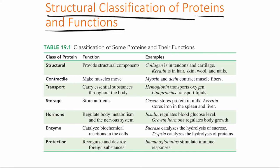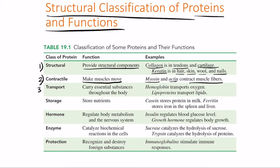We classify proteins based on their functional properties. First are structural proteins, such as collagen — present in tendons and cartilage — and keratin, found in hair, skin, wool, and nails. Second are contractile proteins, such as myosin and actin, which make muscles move. Third are transport proteins, such as hemoglobin, which transports oxygen, and lipoproteins, which transport lipids through polar environments.